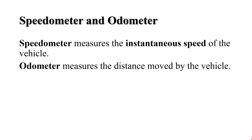Students, now let us understand the terms speedometer and odometer. These are two types of meters installed in motorbikes and vehicles. The speedometer measures the instantaneous speed of the vehicle, while the odometer measures the distance moved by the vehicle.